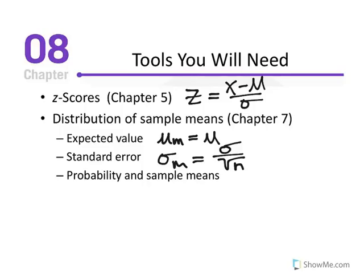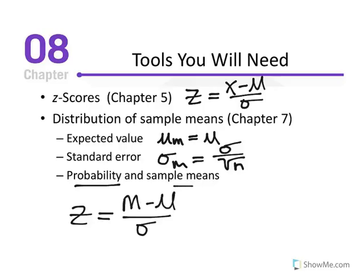We can use probability based on sample means to determine the likelihood of a certain value occurring in the distribution of sample means. To do so, we convert a sample mean into a z-score: z equals m minus mu over the standard error of the mean. This z-value indicates how far the sample mean is from the population mean, expressed in standard error units.